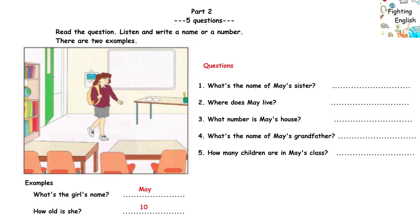1. I've got a sister at this school, too. And what's her name? It's Kim. K-I-M. Yes, that's right.